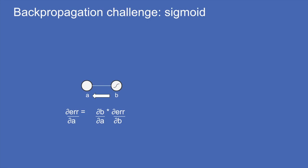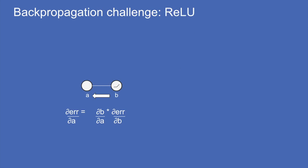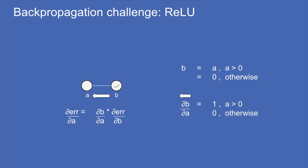For the sigmoid function, written as sigma: it has the nice property that its derivative is sigma times (1 minus sigma) — very straightforward to calculate. For the rectified linear unit, since B equals A when A is positive and 0 otherwise, the derivative dB/dA is 1 if A is positive and 0 otherwise. With all these backpropagation steps and the ability to chain them together, we can calculate the effect of adjusting any given weight on the error for any given input.